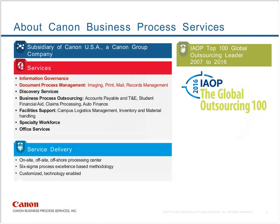Before we get started, for those of you not familiar with Canon Business Process Services, I'd like to give you a little background on who we are. We are a division of Canon USA focused on enabling clients to improve operational and business performance. We have been serving clients for 30 years and offer a wide range of outsourcing solutions, from developing and implementing information governance and records management to document management and imaging services. We support law firms and in-house legal departments with discovery services, from consulting to technology to project management. We deliver customized solutions that can be on-site, off-site, or offshore, depending on the client needs. Over the past 10 years, we've been recognized as one of the top 100 global outsourcing providers by the International Association of Outsourcing Professionals.